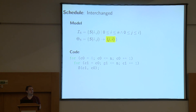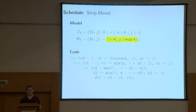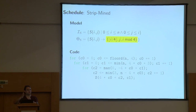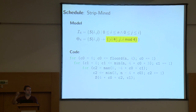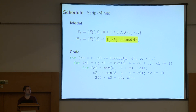You can also do something like strip mining, which is slightly more complicated. You divide one dimension - instead of just saying this is the i dimension, you first go in chunks of four i's, choosing a block of computation. Then in the inner dimension you give a more precise definition of the execution time for elements within the block. If you look at the code generated below, it very quickly gets more complicated than you would actually think. Even a simple strip mine can generate very reasonably complicated code.